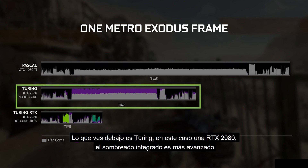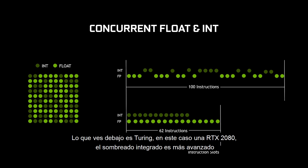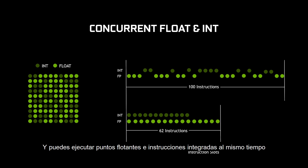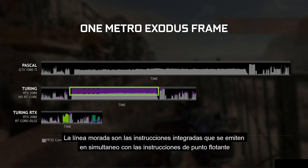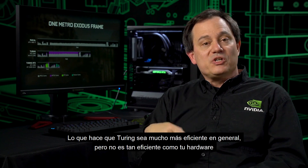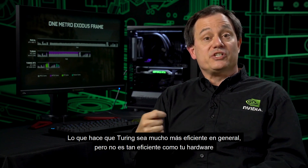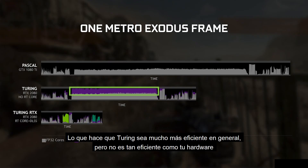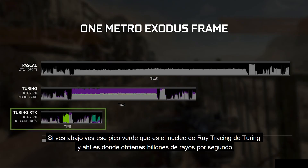What you see below there is Turing — in this case an RTX 2080. The shader in Turing is considerably more advanced in that it can execute floating point and integer instructions at the same time. That purple section is the integer instructions being simultaneously issued along with the floating point instructions, which makes Turing much more efficient just in general. But it's still not as efficient as pure hardware.